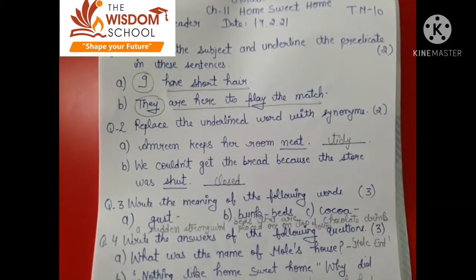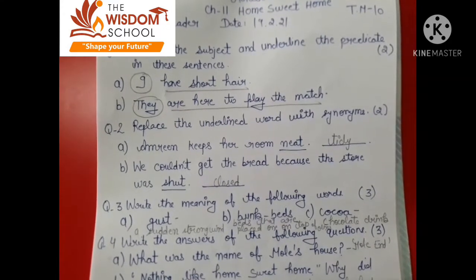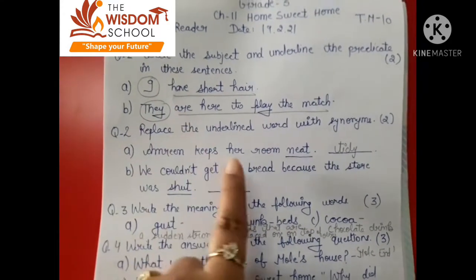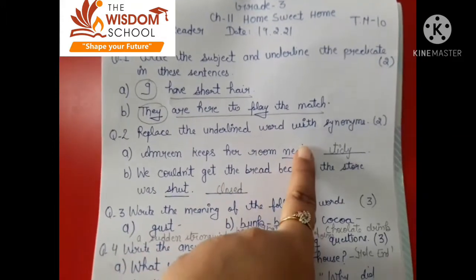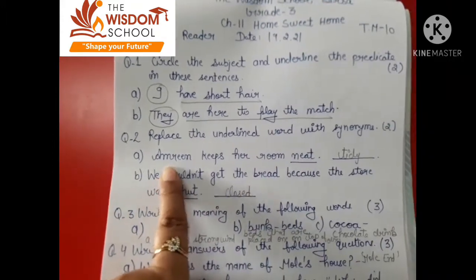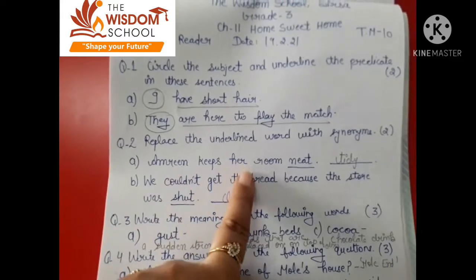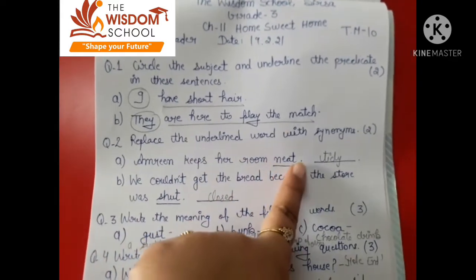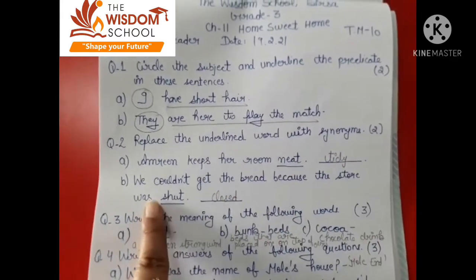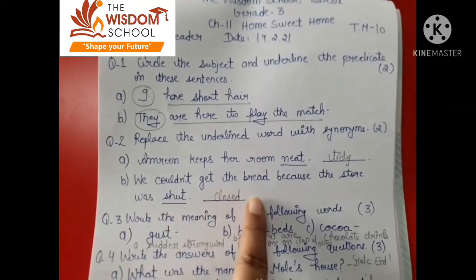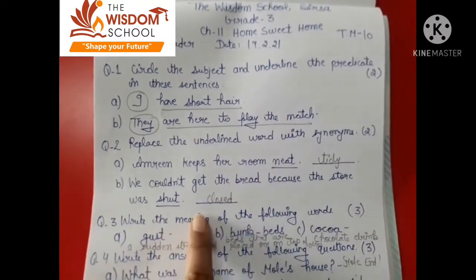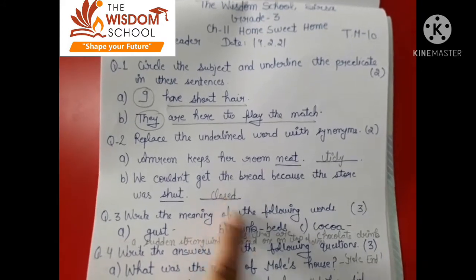Question number two: Replace the underlined word with synonyms. Underline words ko uski synonyms se replace karna hai. Ambrin keeps a room neat — the similar word of 'neat' is 'tidy'. We couldn't get the bread because the store was shut — the similar word of 'shut' is 'closed'.